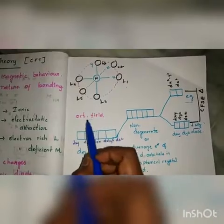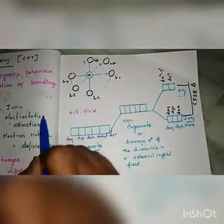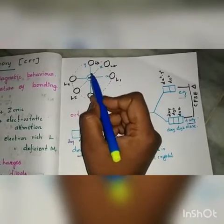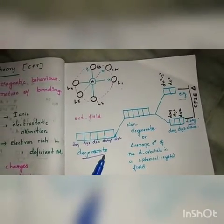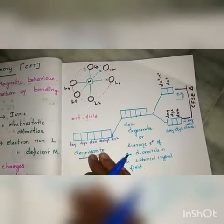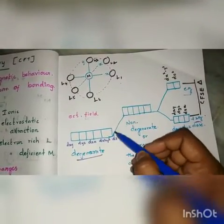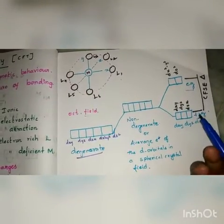In an octahedral field, six ligands approach the central metal atom. When the ligands approach, there develops a spherical field of negative atmosphere. Due to that, the central metal atom experiences repulsive forces, and because of those repulsive forces, the degeneracy of the d orbitals will be lost. Degeneracy means the orbitals have equal energy; when it is lost, they will no longer have the same energy, resulting in a non-degenerate set with an average energy in the spherical crystal field.